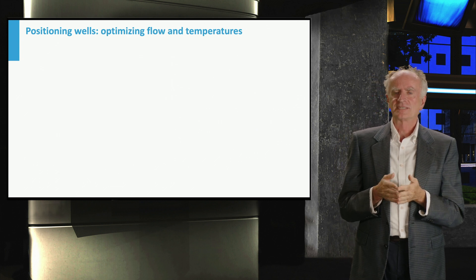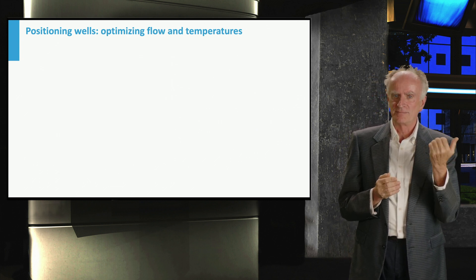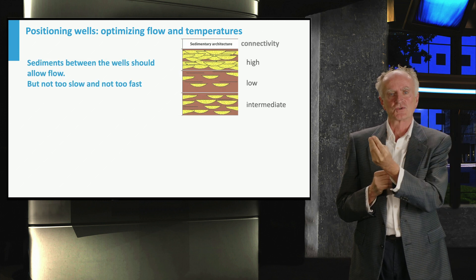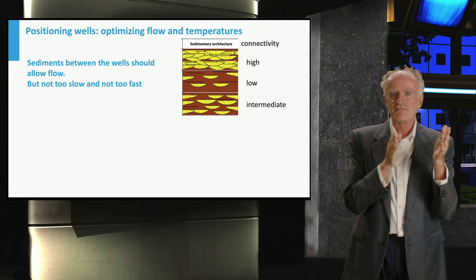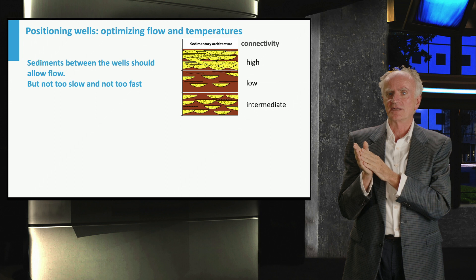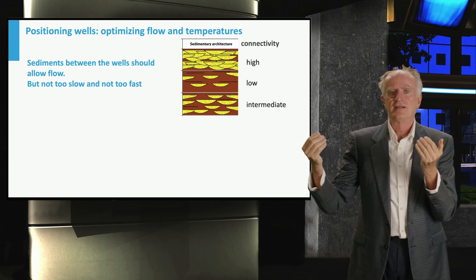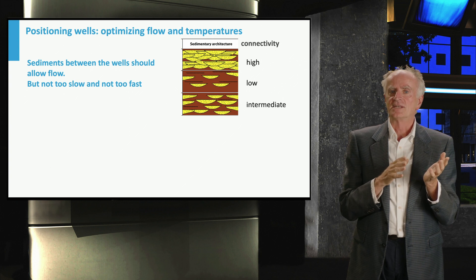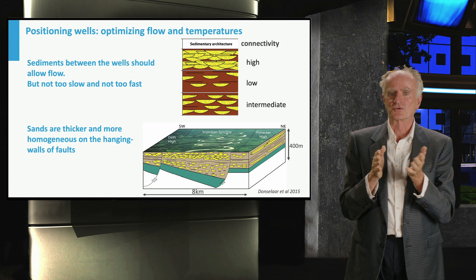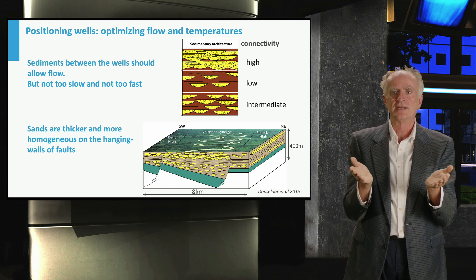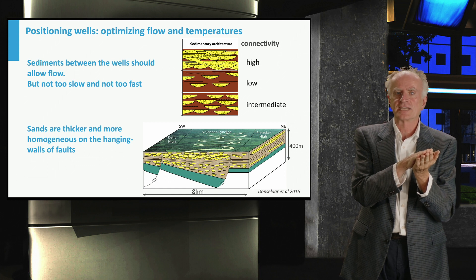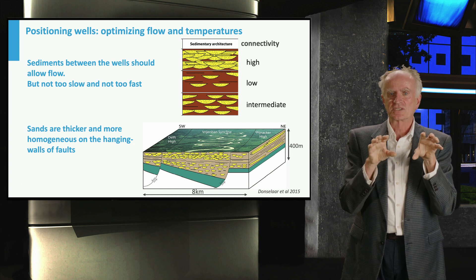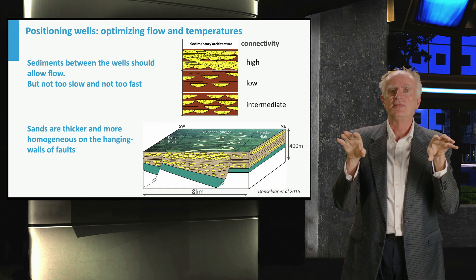The optimal well design meets the two main goals of producing a substantial amount of heat during a lifetime of at least 15 years. The rate of flow from the injector to the producer along the reservoir is key. If flow is too slow, then little heat will be extracted. But if flow is too fast, then temperatures at the producer will decrease long before the expected lifetime. The distribution and thickness of sands in the Delft sandstones is controlled by syndepositional normal faulting, leading to high thicknesses of fairly homogeneous sands on the hanging walls of normal faults generally oriented northwest and southeast. Successions on the sides are richer in shale and therefore less connective.